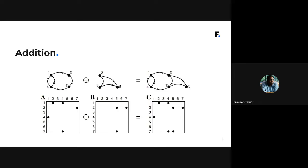Let's start with a simple example: matrix addition. When you add two matrices and get a third matrix C, what that means for the graphs those matrices represent is that you're performing a graph union operation — combining two graphs by taking the union of their vertex sets and the union of their edge sets.